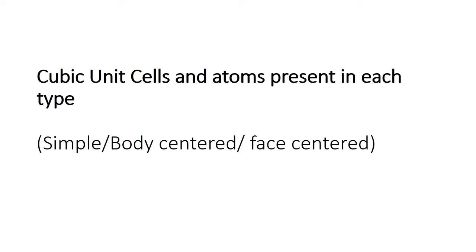We are going to discuss cubic unit cells and the atoms present in each type. Starting with the crystalline solid, imagine a wall made up of bricks. To make a wall, you need bricks lined row by row — the brick is the repeating unit. Bricks are repeated and that is how you get a wall. Similarly, in a crystalline solid you have repeating units called unit cells. A crystalline solid is made up of unit cells.